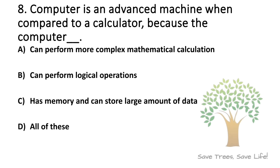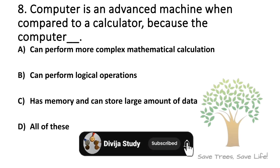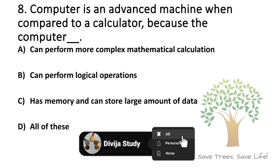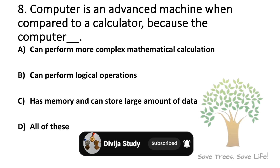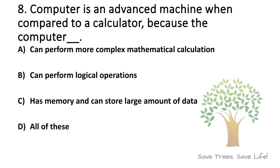Question number 8. A computer is an advanced machine when compared to a calculator. Because the computer dash — Option A: can perform more complex mathematical calculations, Option B: can perform logical operations, Option C: can store a large amount of data, Option D: All of these. So the answer is Option D: All of these.